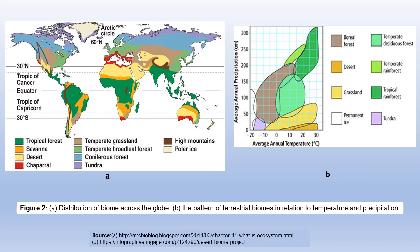Figure A shows the distribution of biomes across the globe. Figure B shows the pattern of terrestrial biomes in relation to temperature and precipitation. In figure B, the x-axis shows average annual temperature and the y-axis shows average annual precipitation. It appears that the tropical rainforest biomes show high precipitation, desert biomes show low precipitation, temperatures in desert biomes are high, whereas tundra biomes show low temperatures.